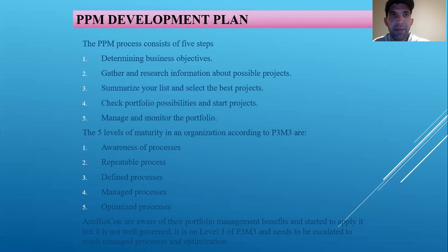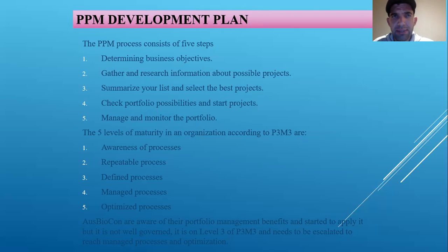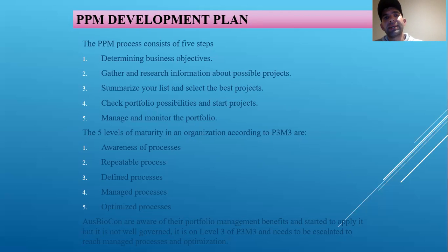Step one: determine the business objectives — outline business objectives through strategic maps and communicate with teams for priority. Step two: research — gather information about possible projects, stakeholders, team members, clients, and managers by collecting data from similar projects and compiling ideas and data. Step three: summarize your list and select projects — use the gathered information to select projects that best work with your business objectives; this data is used to define project variations and create a temporary portfolio.